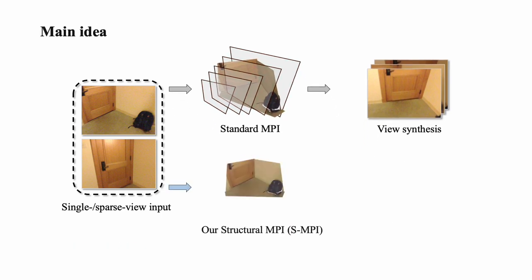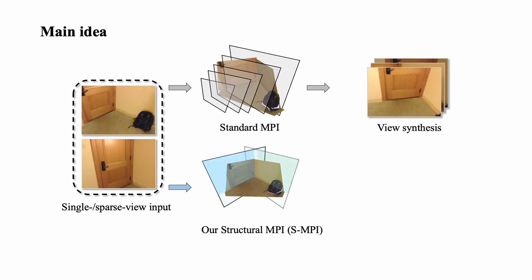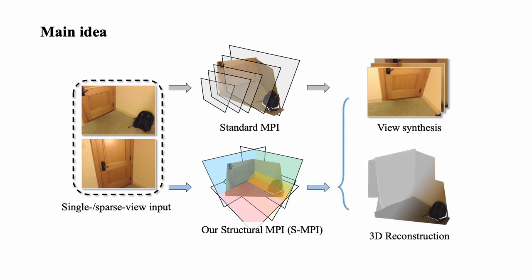To answer this question, we introduce the structural MPI, where the plane structure approximates 3D scenes concisely. To build a structural MPI from single or sparse view images, view synthesis and planar 3D reconstruction are directly bridged together.